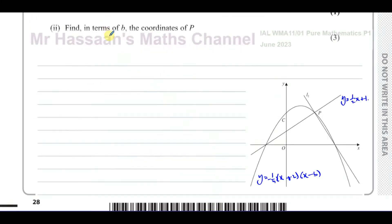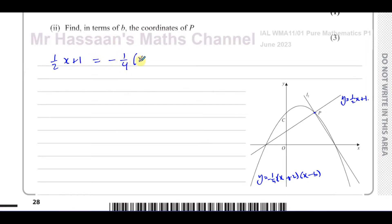Now for part A2: find, in terms of b, the coordinates of P. We have the equation of line L1, which is y = ½x + 1, and the equation of curve C, which is y = −¼(x + 2)(x − b). Point P is where the line and the curve intersect, so we set ½x + 1 equal to −¼(x + 2)(x − b).